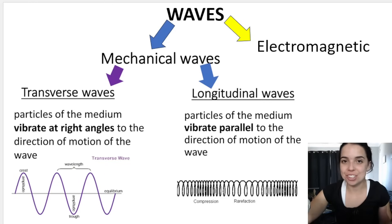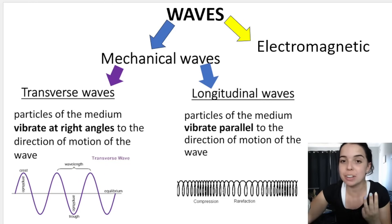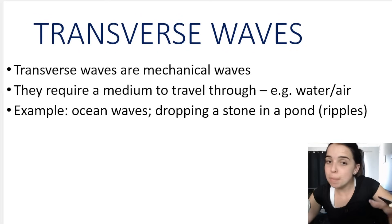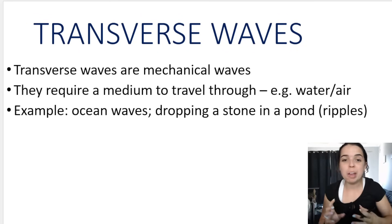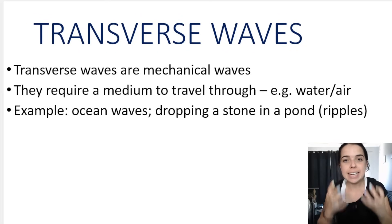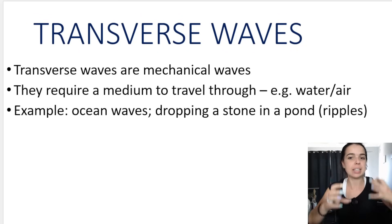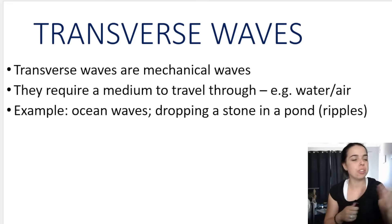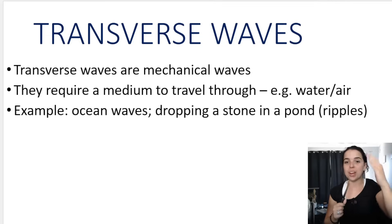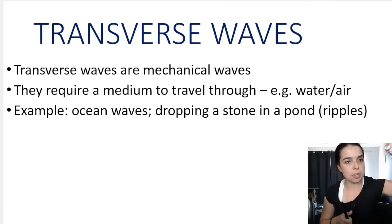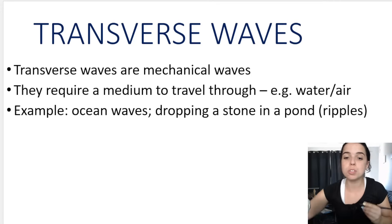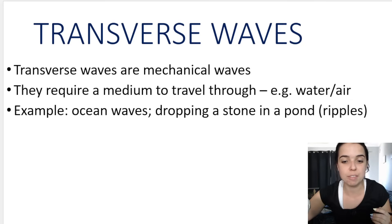In the previous introduction video, we briefly looked at the three different types of waves we will be learning about this year. Remember, transverse waves are mechanical waves — they need a medium to travel through, like air or water. When you think of a transverse wave, think of ocean waves, or dropping a stone in a pond and seeing the ripples. Those ripples represent a transverse wave.